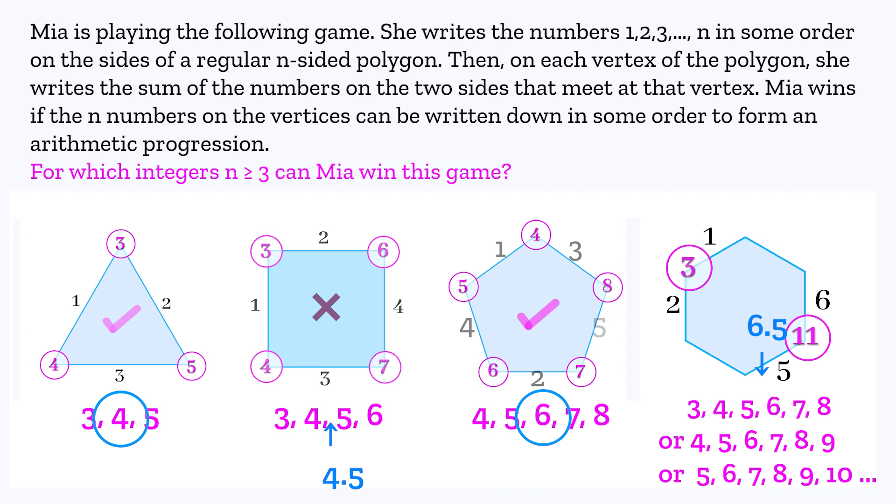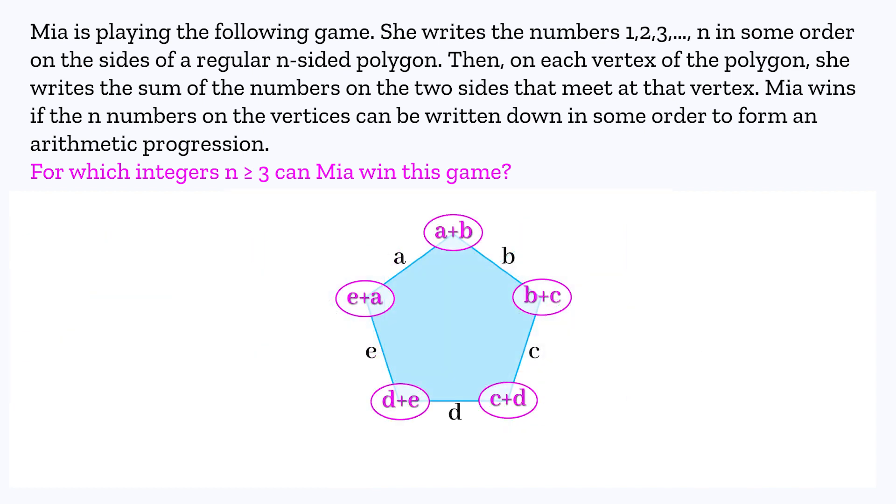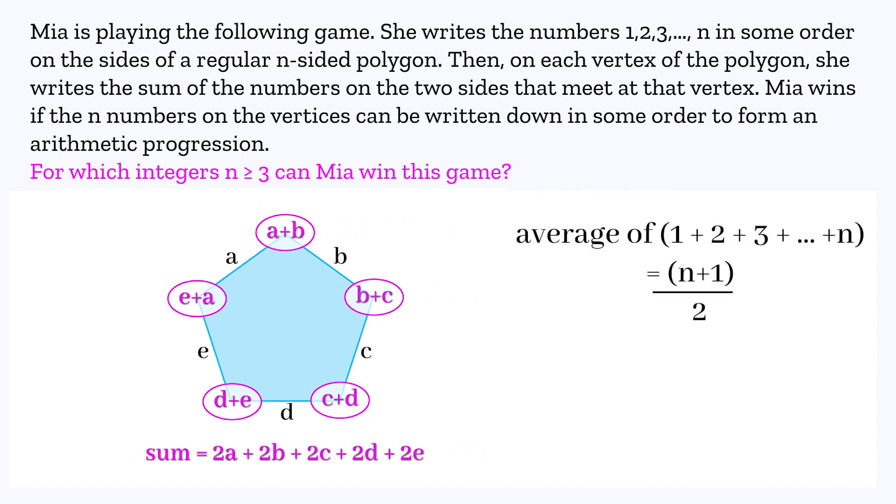So if it's the case that the average must be 7, but it cannot be, that would be enough to prove that there's no solution for n equals 6. But how can we prove that the average must be 7? To understand the average, we need to understand the total. And if we look at the total of the vertex sums, because every edge is counted twice, we're going to have exactly double the total sum of the original numbers.